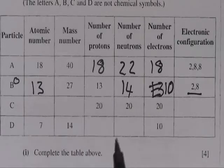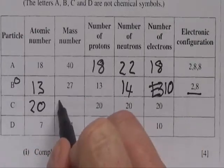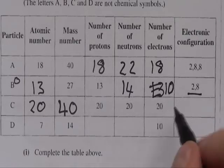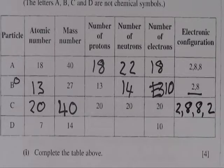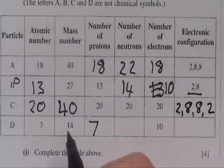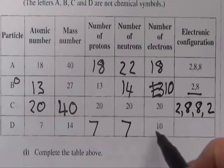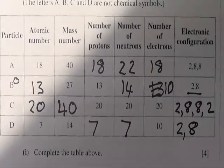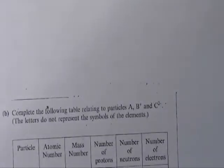For C: number of protons is 20, so atomic number must be 20. Mass number is protons plus neutrons, so that must be 40. With 20 electrons the electron configuration is 2,8,8,2. For D: atomic number is 7, so proton number must be 7. Neutrons are 14 minus 7 which is obviously 7. But the electron configuration given is 2,8, meaning it has ten electrons — not seven — so we need to be careful. The electron arrangement is 2,8.